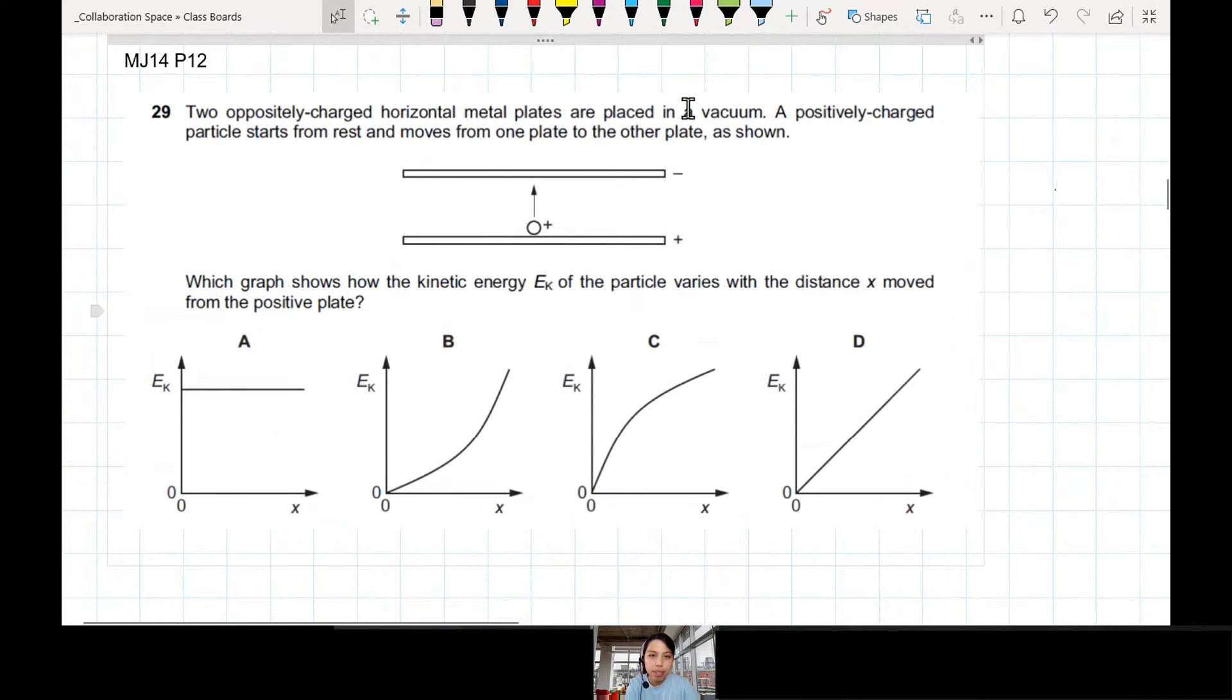Two oppositely charged metal plates are in a vacuum. When you see that, think plates and uniform field. A positively charged particle starts from rest and moves from one plate to the other, as shown.